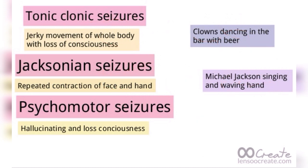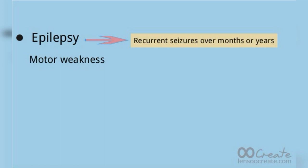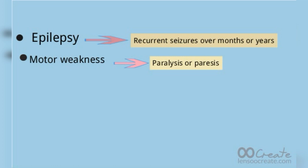There is nothing special about psychomotor seizure — as the name indicates, there is hallucination, seeing things that are not present, so no mnemonic is needed. Motor weakness is defined as paralysis and paresis. Paralysis is defined as total or complete loss of power, and paresis is defined as partial loss of power.